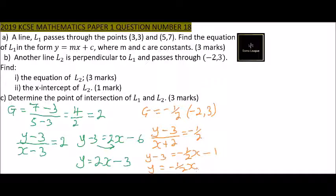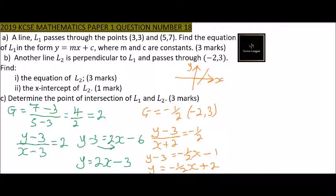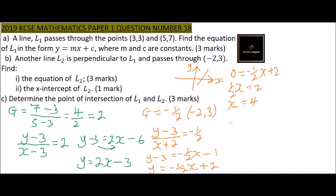Where the line cuts the x-axis, the value of y is 0. So we say 0 = -½x + 2. Taking ½ to the other side gives ½x = 2. Multiplying both sides by 2, we get x = 4.